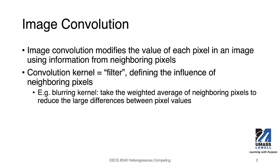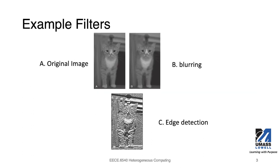For example, we can use a blurring kernel, which takes the weighted average of neighboring pixels to reduce the large differences between pixel values. Here are some example filters. A shows the original image. B shows the blurring filter applied to the original image, generating a new picture where the image is blurred. Another filter is called an edge detection filter, which can be applied to the original image, and the resulting image shows clearly where the edges lie.